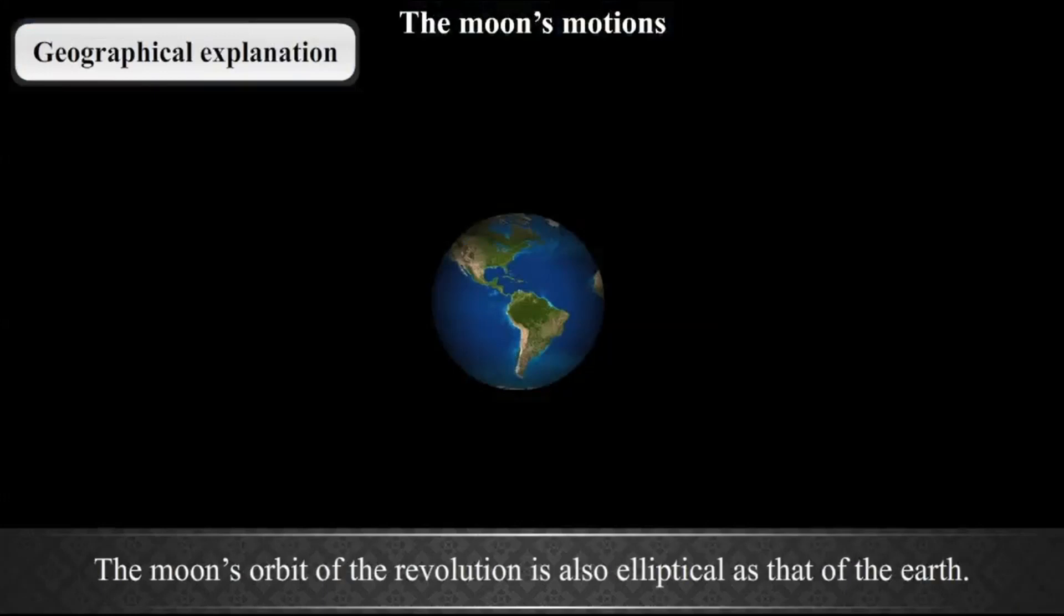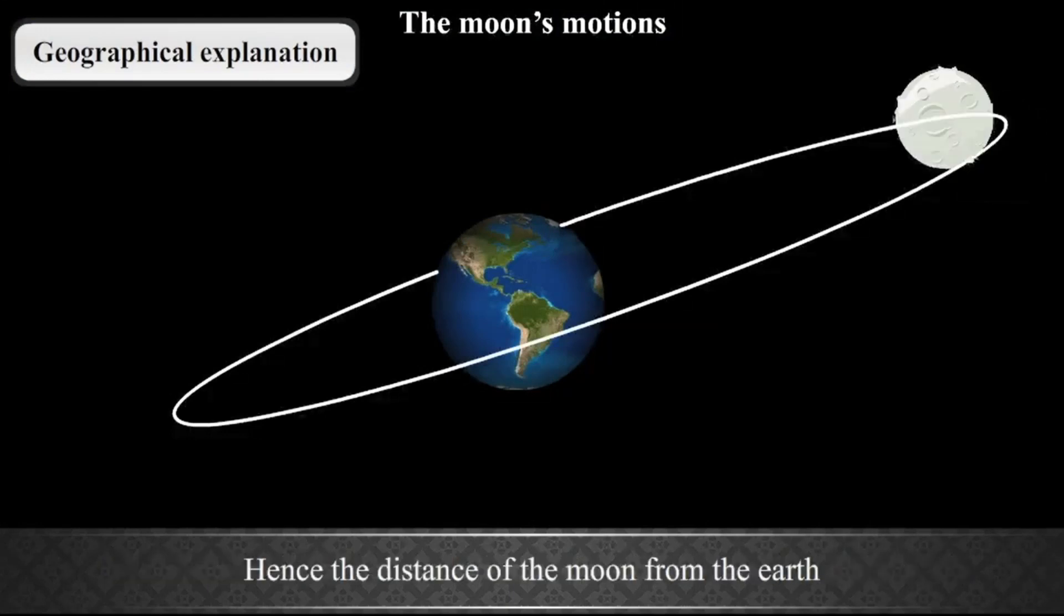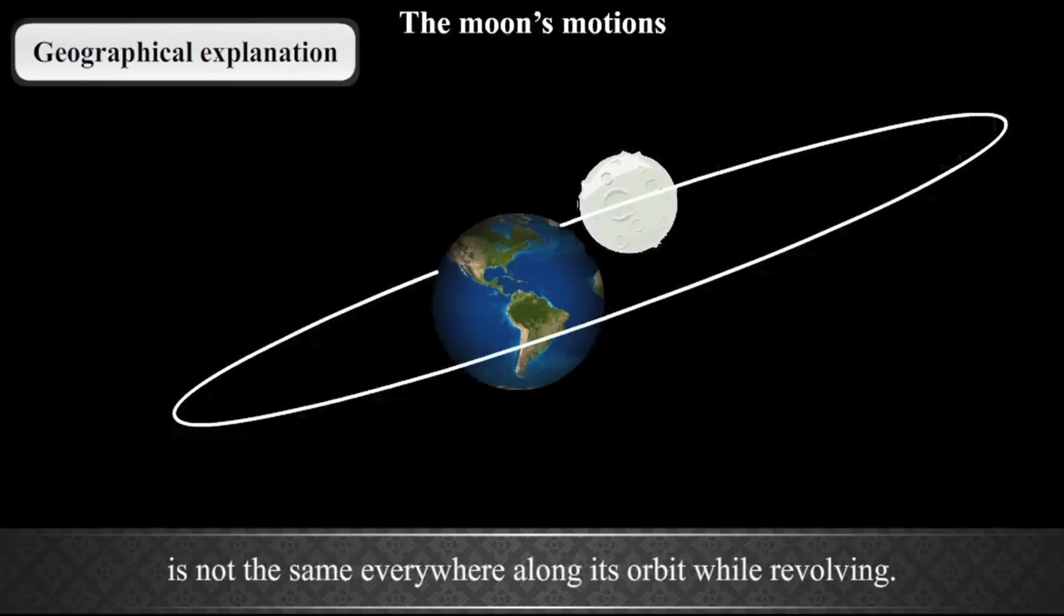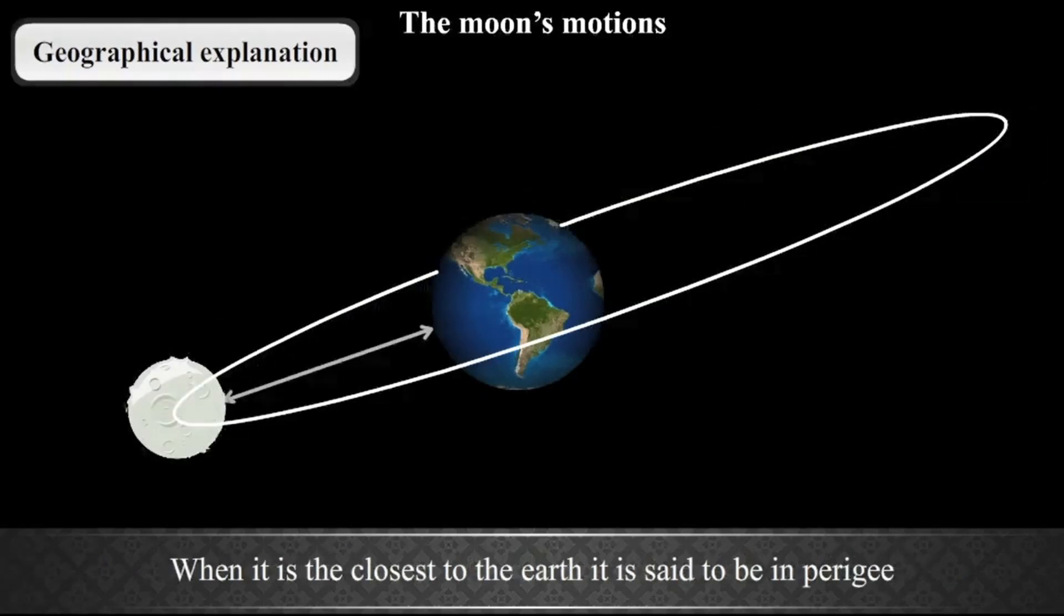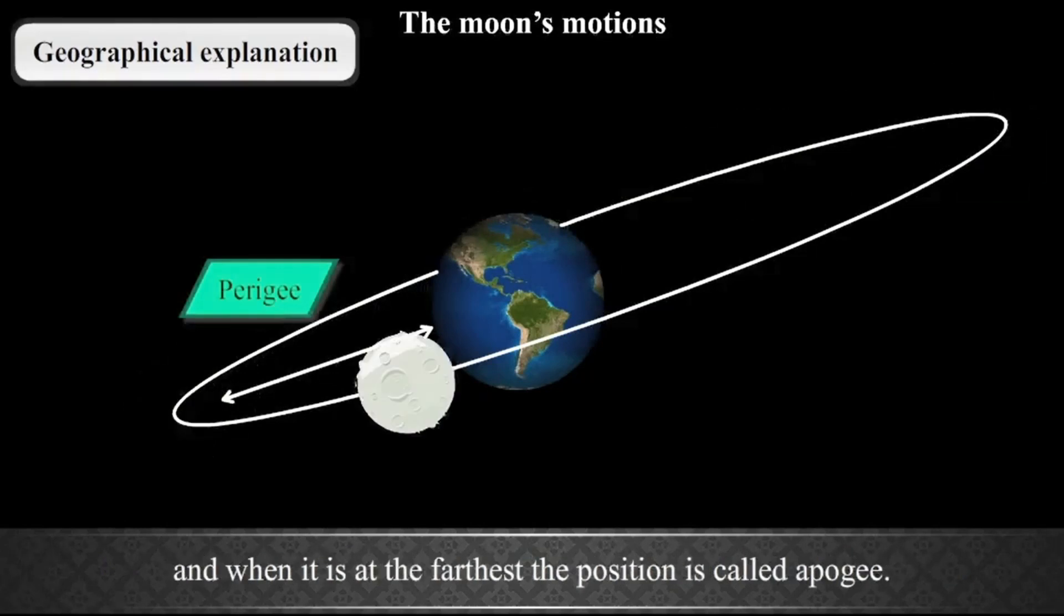Geographical Explanation. The Moon's orbit of the revolution is also elliptical as that of the Earth. Hence, the distance of the Moon from the Earth is not the same everywhere along its orbit while revolving. When it is closest to the Earth, it is said to be in perigee, and when it is at the farthest, the position is called apogee.